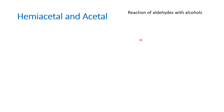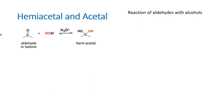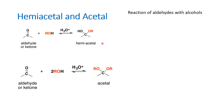First and foremost, what are hemiacetals and acetals? Hemiacetals and acetals are compounds which are formed by the reaction of aldehydes with alcohols. It need not be only an aldehyde — it can also be a ketone. Carbonyl groups such as aldehydes and ketones react with alcohol to form hemiacetal. If we take an excess of alcohol, then we get acetal.